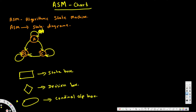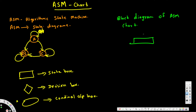Now let's look at a block diagram of an ASM chart. It will always start with a state box — here we have the entry part. Then we will have the decision box, and the decision box will have two options: true or false, zero or one.